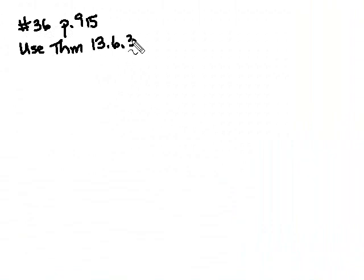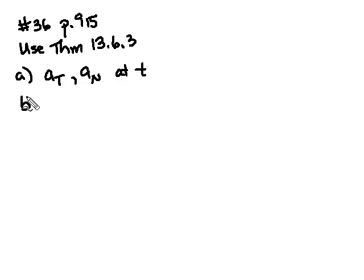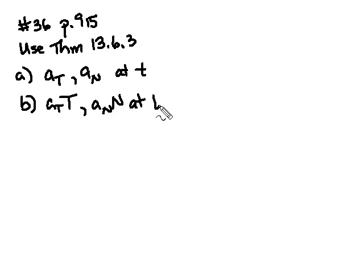We're going to continue our discussion of section 13.6 about motion along a curve. We're going to look at number 36 on page 915, which says to use theorem 13.6.3 to find: part A, the scalar tangential and scalar normal components at a given value of T; part B, the vector tangent and vector normal at that same value of T; and part C, the curvature at T.